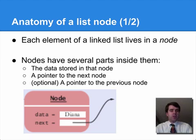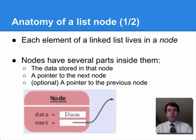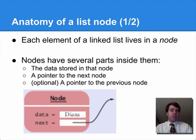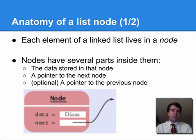It might look a little strange to see a class that contains an object of its own class inside of it, but that's perfectly normal for a node class — that's how it works. Optionally, if you're making what's called a doubly linked list, each node can actually have a pointer not just to the next node, but also a pointer to the previous node.